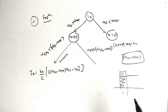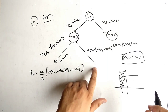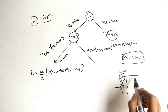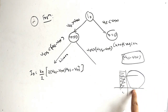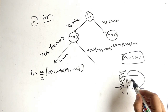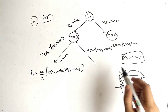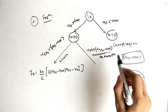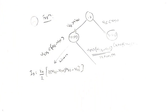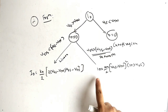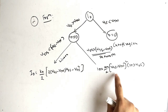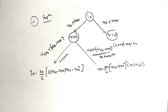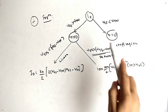When VDS is greater than VGS minus VTN, the region is saturation. The formula for saturation is: ID = (KN / 2) × (VGS − VTN)² × (1 + λ·VDS).